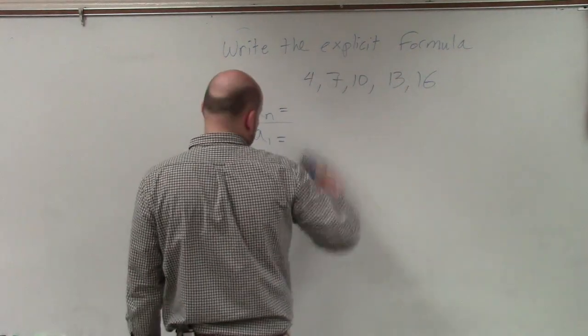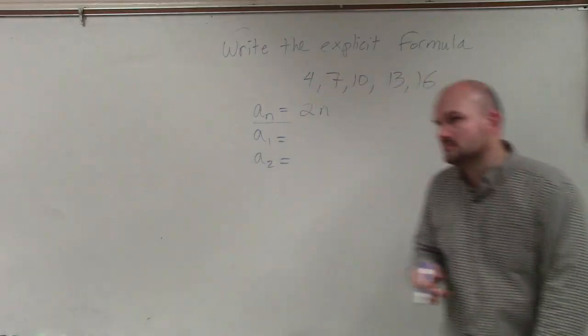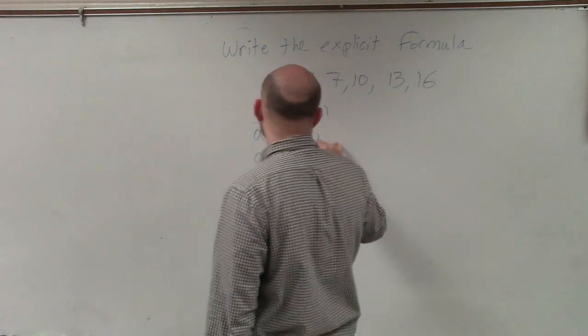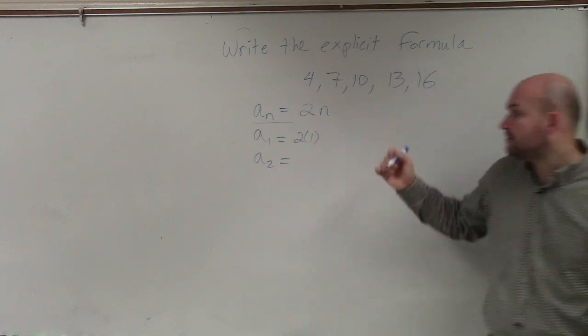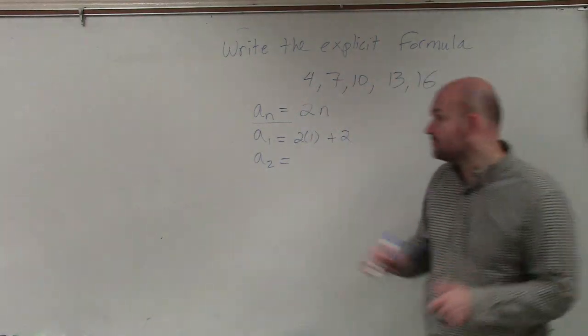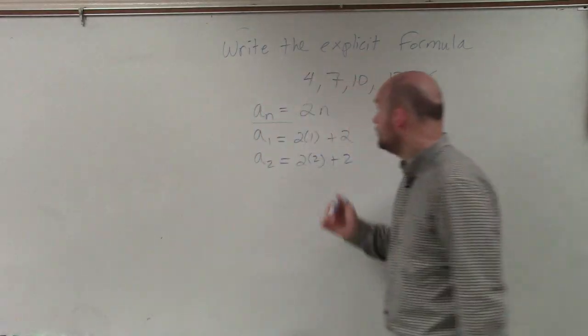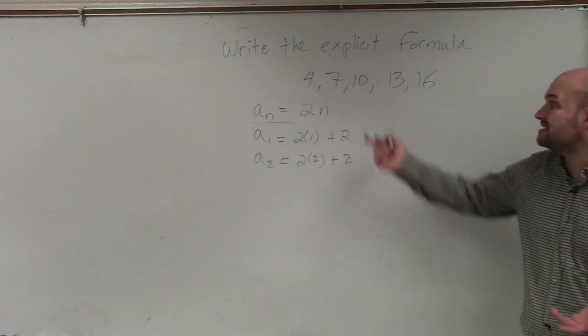Now let's look at multiplication. When looking at multiplication, let's multiply by 2. Seems basic, right? If I do 2 times 1, that doesn't equal 4. So what would I have to add to it? 2. Let's check. Does that work for n=2? 2 times 2 plus 2. Well, 2 times 2 is 4, plus 2 is 6. So it doesn't work.